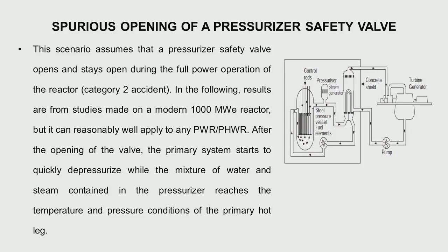Let us take a pressurized water reactor. Just to recapitulate: you have the reactor vessel, the core, and the control rods. Water is pumped by a pump — it is light water — it picks up heat, and in order that it does not boil we keep a high pressure using a pressurizer. After taking up the heat, it gives heat to the steam generator where another light water picks up heat, goes through to the turbine, runs the turbine, and comes back.